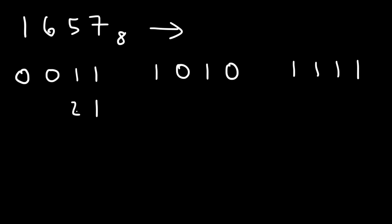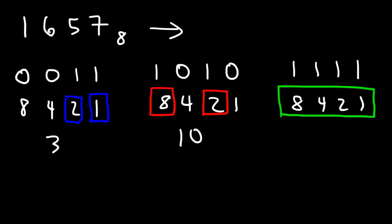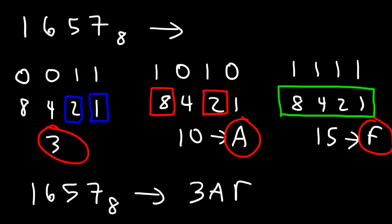This first group is associated with place values 1, 2, 4, 8. We have a 1 associated with the 2 and 1, so 2 plus 1 is 3. For the second group of 4, we have a 1 associated with the 8 and the 2, so 8 plus 2 is 10. For the last group, every number is associated with 1, so we add 8 plus 4 plus 2 plus 1: that's 12 plus 2 is 14, plus 1 is 15. Now 10 corresponds to A and 15 corresponds to F in hexadecimal. Reading left to right: 3, A, F. So 1657 in the octal system corresponds to 3AF in the hexadecimal system, base 16.